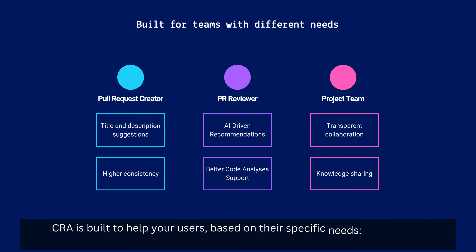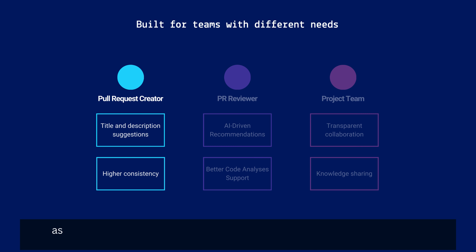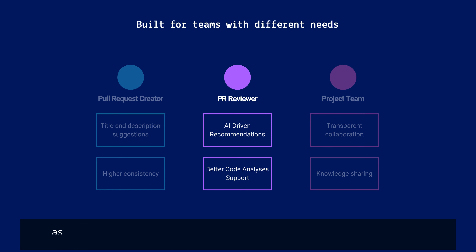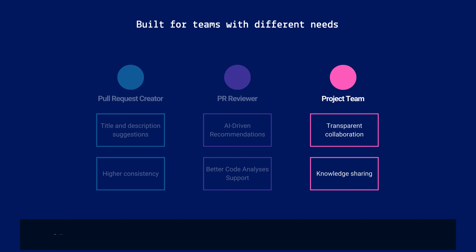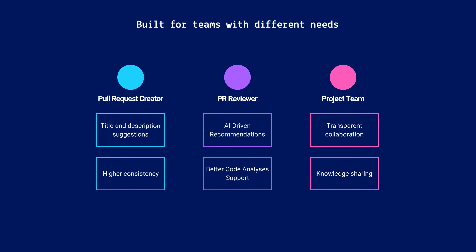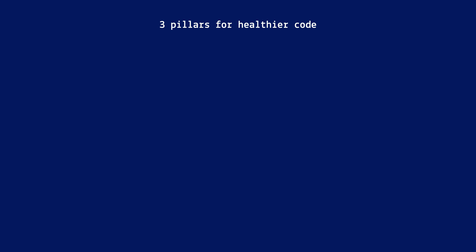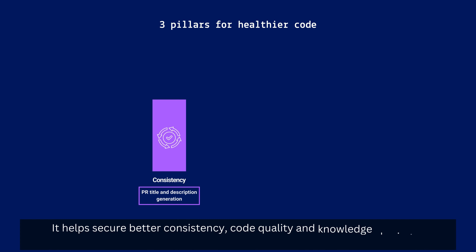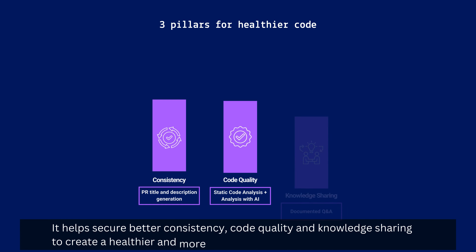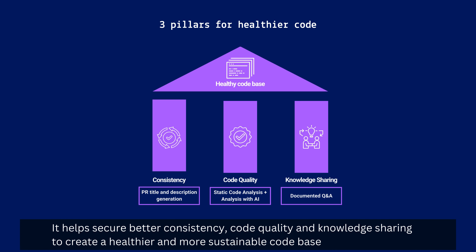CRA is built to help your users based on their specific needs — as creators, as reviewers, or as team members looking to stay updated. It helps secure better consistency, code quality, and knowledge sharing to create a healthier and more sustainable code base.